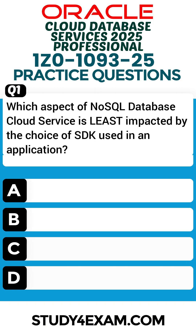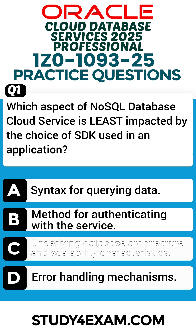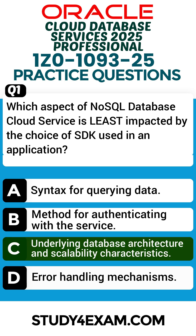Question 1. Which aspect of NoSQL database cloud service is least impacted by the choice of SDK used in an application? Correct answer: C. Underlying database architecture and scalability characteristics.